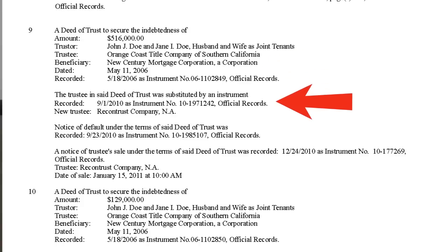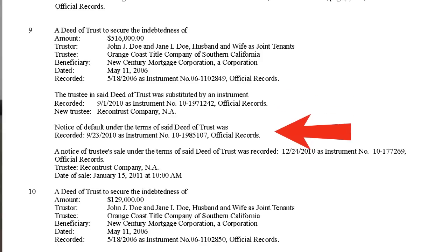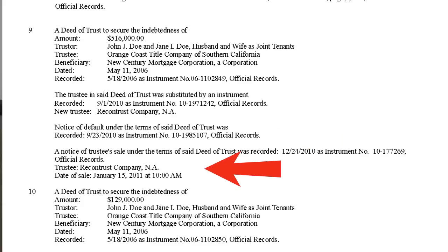A substitution of trustee means a new trustee was substituted for the trustee named in the deed of trust. A notice of default means the terms of the trust deed were violated — for example, failure to pay monthly installments — and as a result, a notice of said default was recorded against the property. A notice of trustee sale means the delinquency noted in the notice of default was not cured, and this is the next step in the non-judicial foreclosure process.